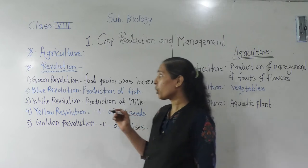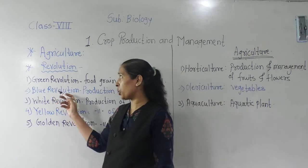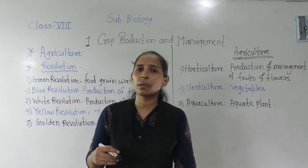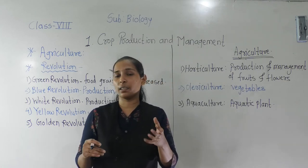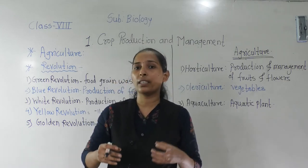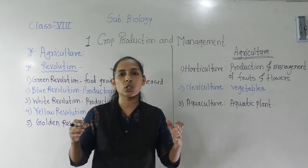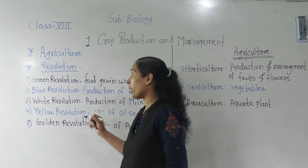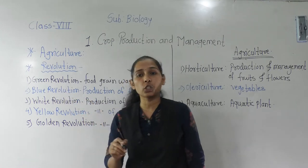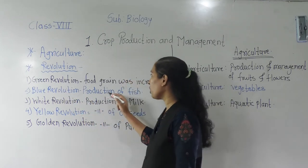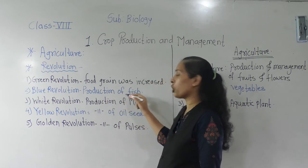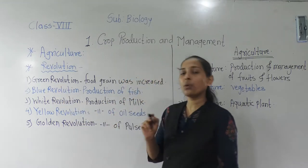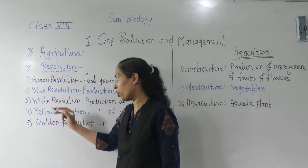The next revolution we will talk about is the Blue Revolution. As we know, the definition of agriculture tells us it is the branch of science that deals with mass production of crop plants and animals. So the Blue Revolution means an increase in the production of fish. That is the Blue Revolution.